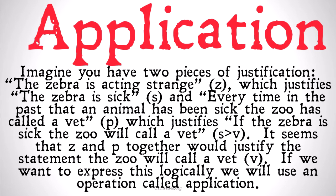Imagine that you have two pieces of justification: the zebra is acting strange, which justifies the proposition 'the zebra is sick' (S), and every time in the past that an animal has been sick the zoo has called a vet (P), which justifies 'if the zebra is sick, the zoo will call a vet' — S implies V. It seems that Z and P together will justify the statement that the zoo will call a vet, because they justify the antecedent of a conditional and the conditional itself.